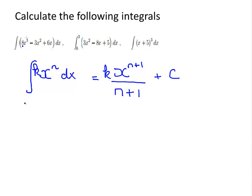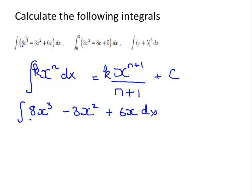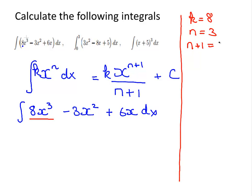Let's do the first one: the integral of 8x cubed minus 3x squared plus 6x. We're going to break it up into three parts. For the first term, k is equal to 8 and n is equal to 3, so n plus 1 is 4. The integral of that part is 8x to the power of 4, divided by 4.